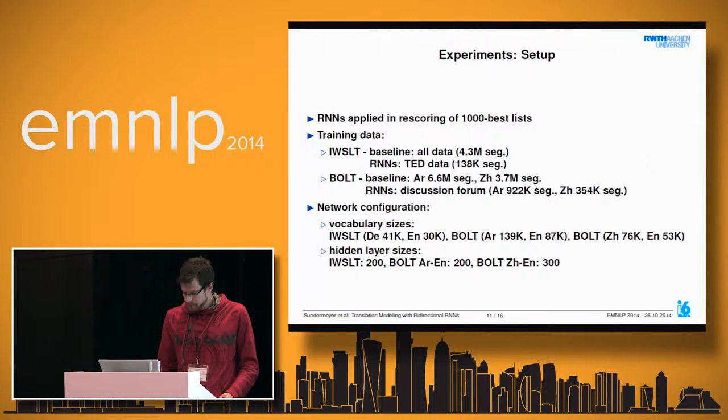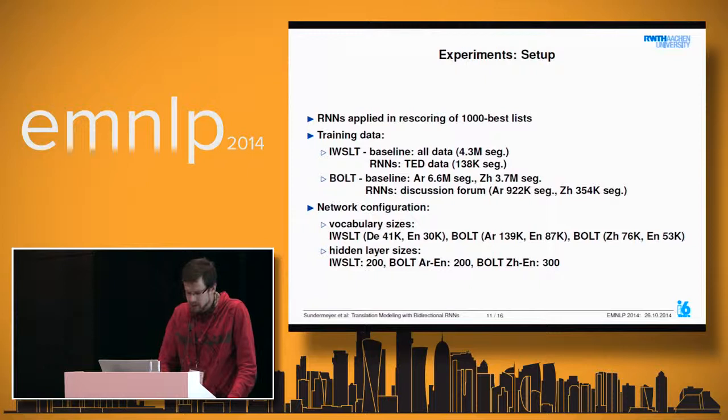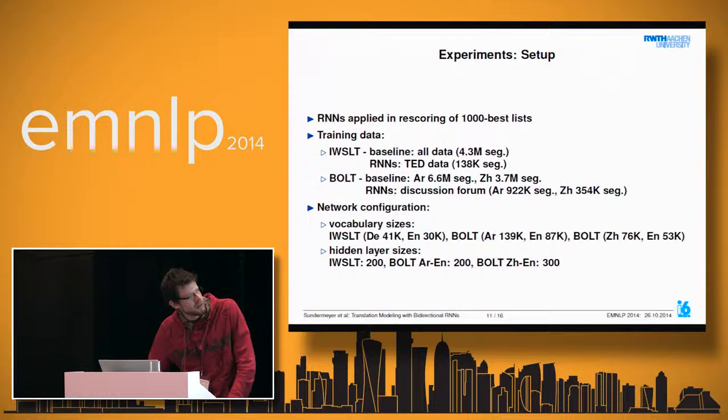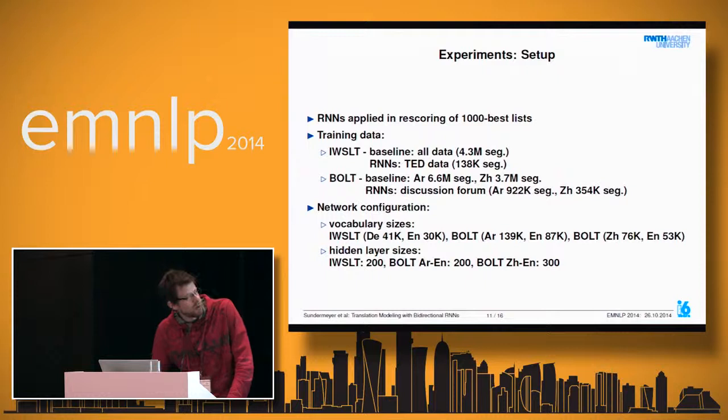The experimental setup uses rescoring only, applied on top of a phrase-based translation decoder. We evaluate on three tasks: the IWSLT German-English task using all available data for the baseline and in-domain TED data for RNN training, and two DARPA BOLT tasks—the same project Salim Roukos discussed earlier—with strong baselines trained on large data and neural networks trained on in-domain subsets.